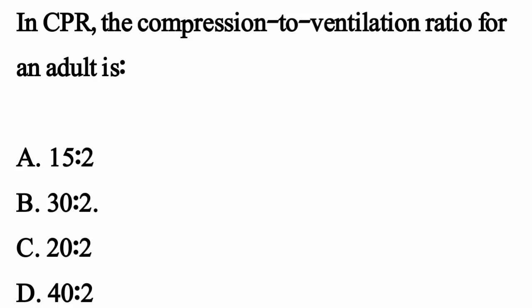In CPR, the compression-to-ventilation ratio for an adult is — the correct option is Option B, 30 and 2.